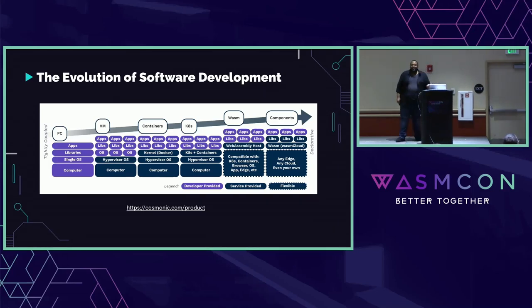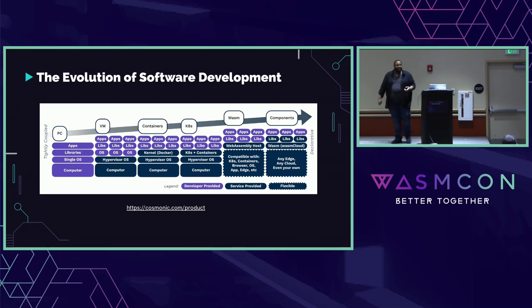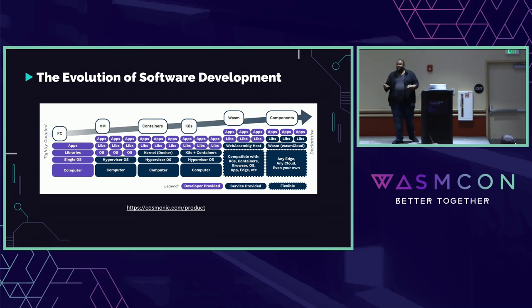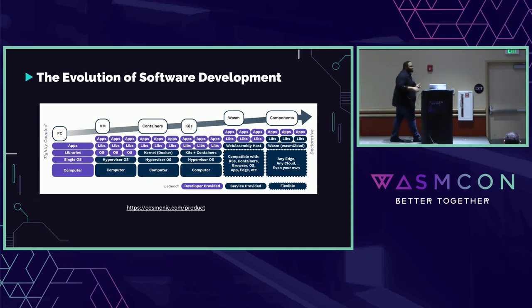This is a slide from our friends at Cosmonic that really shows what software development is going to continue to look like. In the beginning with just the PC, as a developer you had to worry about writing your app, providing the libraries, figuring out what OS would run, and even providing the physical hardware. Then we got VMs, where developers weren't worried about hardware anymore. Then containers, where we don't even care about VMs. That fast-forwards into Kubernetes and WebAssembly, and now components, where we're simply worried about building our apps - we don't even have to worry too much about what the libraries are.